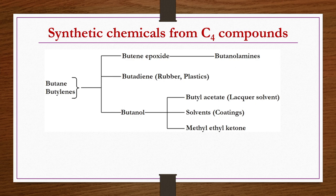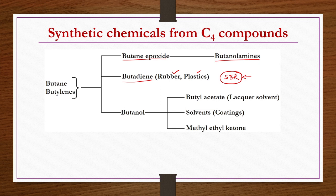Now we will discuss the production of different types of synthetic chemicals from C4 compounds — that is butanes or butylenes or both. We have a pictorial representation of what synthetic chemicals you can produce from butane or butylenes. Options include butylene epoxide, which can be further converted to butanol amines; butadiene, which is largely used for plastics and rubbers especially in SBR (styrene butadiene rubber); and butanol, primarily used as a solvent or to produce butyl acetate and methyl ethyl ketone.